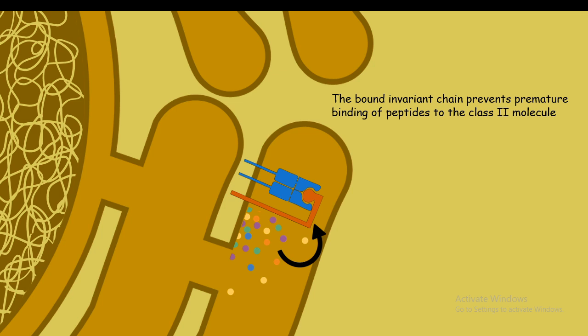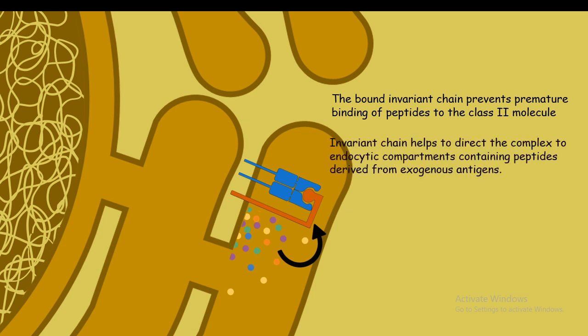The invariant chain serves its purpose and prevents any kind of endogenous antigen from being presented on class 2 MHC. It also helps in transport. Experiments have shown that in cases where these invariant chain genes are mutated, the class 2 MHC molecules are retained in the ER and never displayed on the cell surface. This means it helps in the intracellular transport of MHC class 2 molecules.